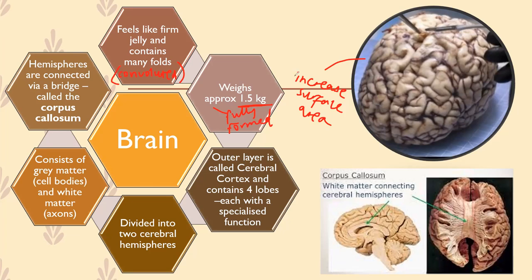The outer layer of the brain — the part you can see from the outside without dissecting or cutting through it — is called the cerebral cortex. That's the outermost surface, the outer layer of the brain that you can see just from looking at it on the outside.